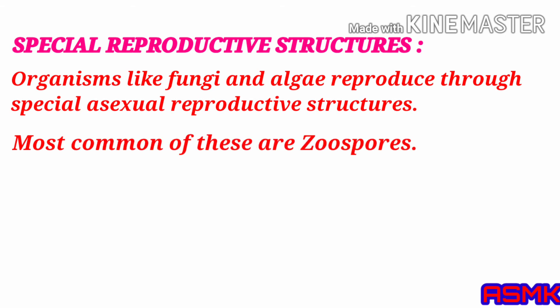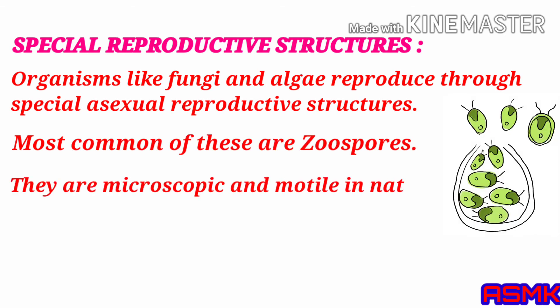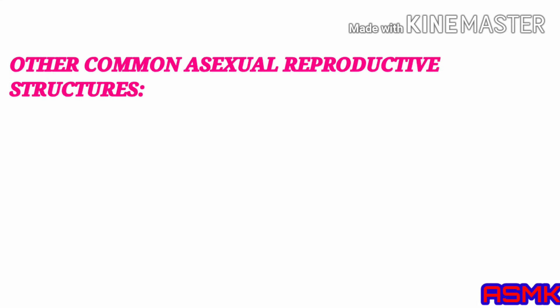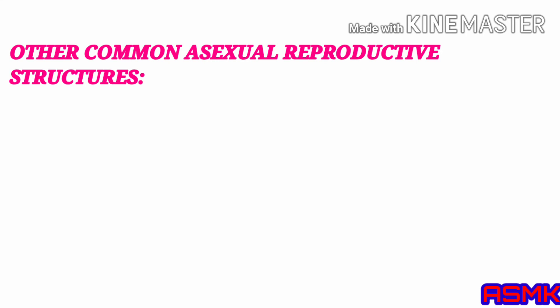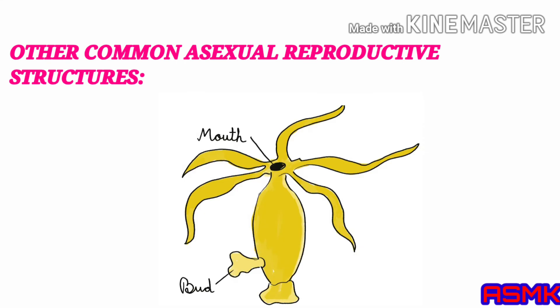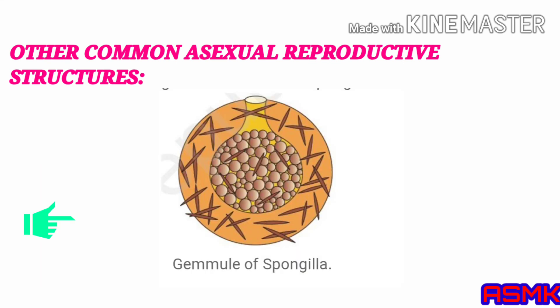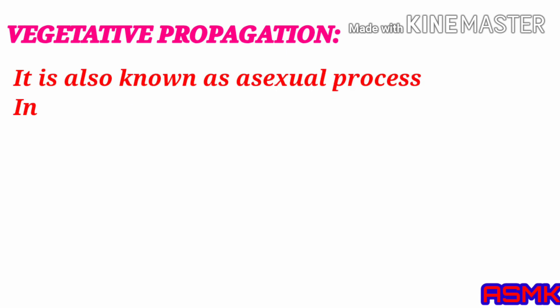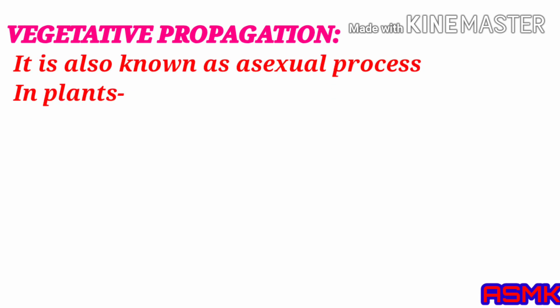Special reproductive structures: organisms like fungi and algae reproduce through special asexual reproductive structures. The most common of these are zoospores, which are microscopic and motile in nature. Other common asexual reproductive structures include conidia in Penicillium, buds in Hydra, and gemmules in sponge.